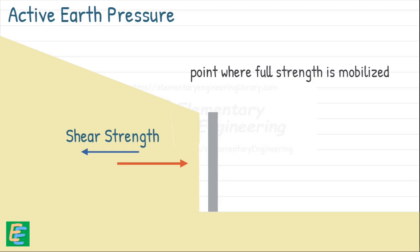Beyond this point, the soil can no longer hold its shape, it fails along a slip surface. At this moment, the pressure on the wall is at its minimum. This lowest possible lateral earth pressure acting on the wall is called active earth pressure.